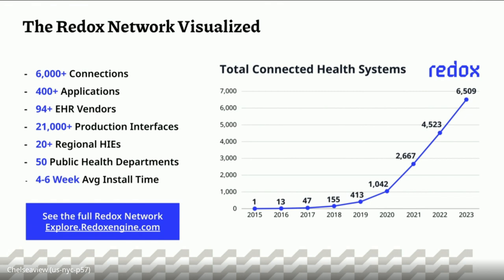This is what that network growth looks like over those years — it started kind of slow and then hit a momentum and inflection point. What customers found was that by using Redox they were able to take a whole big chunk of infrastructure work their engineering teams were doing — whether as an ISV or a provider organization — and free those teams up to actually work at the experience layer: improve patient experience, make it easier for providers to leverage the technology they're tasked with.